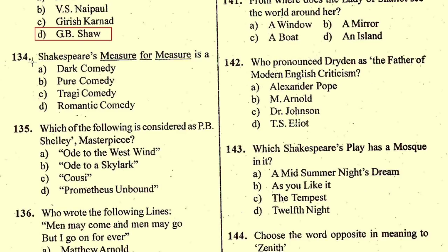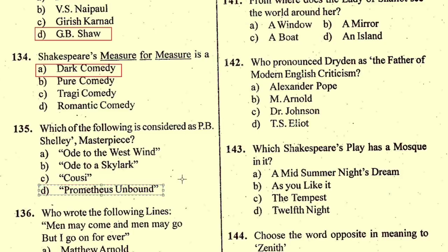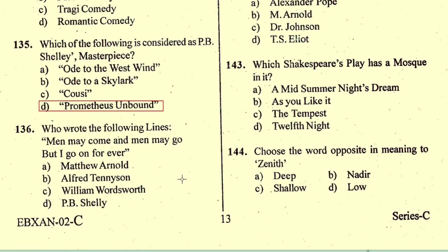Question number 134: Shakespeare's 'Measure for Measure' is a — option A, dark comedy, is the correct option. Question number 135: Which of the following is considered P.B. Shelley's masterpiece? 'Prometheus Unbound' is considered Shelley's masterpiece, so option D is correct.